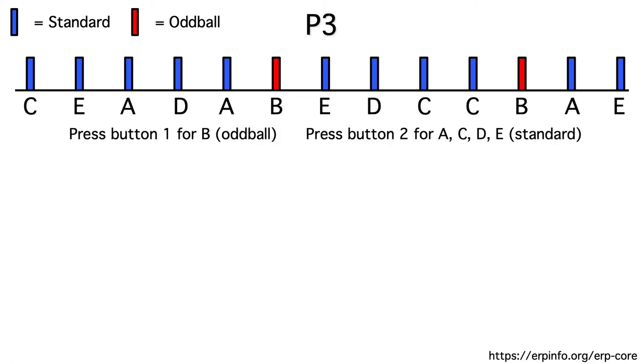For example, imagine that we present the letters A, B, C, D, and E with equal probability in random order on a video monitor. And imagine that we ask subjects to press one button for the letter B and another button for any other letter.